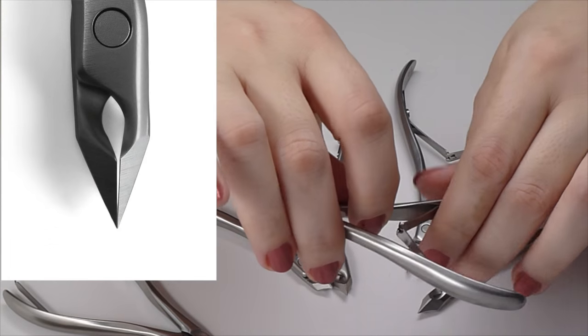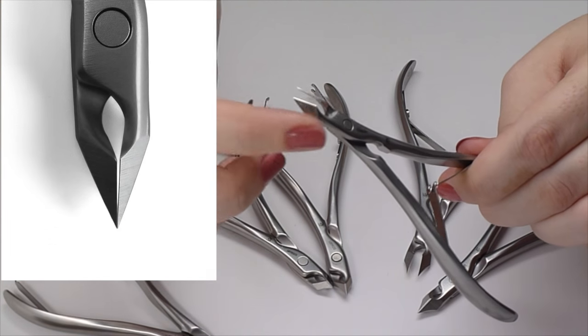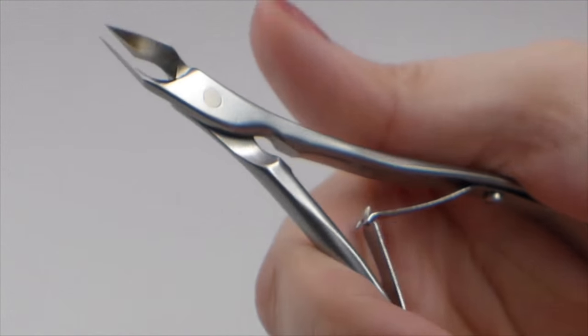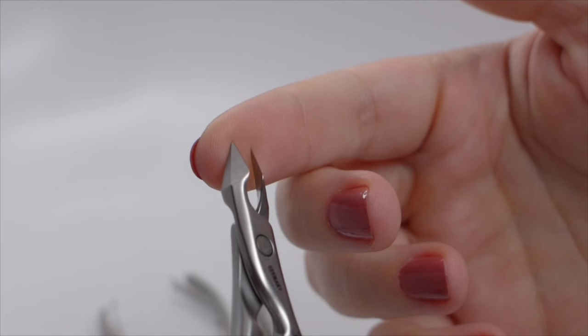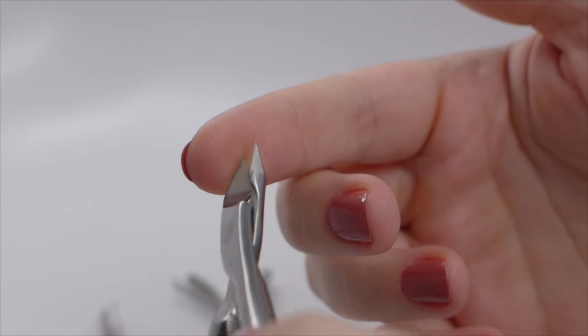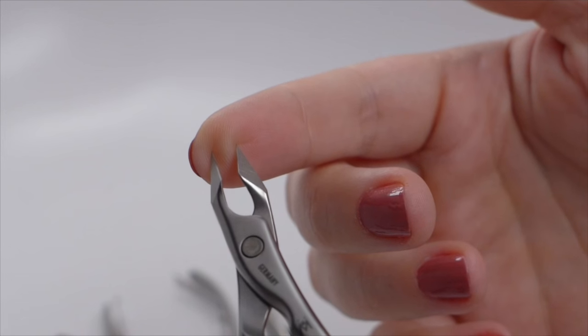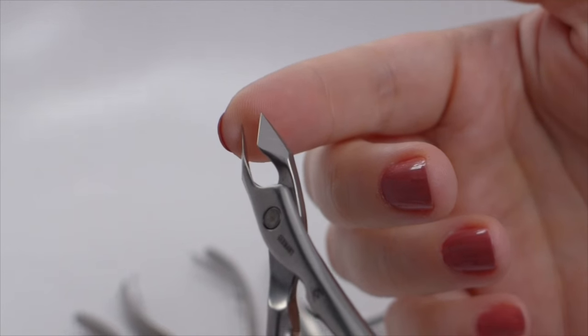The tapered jaw presents the blades at a slightly steeper angle for a more aggressive cut. It produces a very straight line and fits into smaller, narrower, hard-to-reach areas. This jaw shape allows for more precision but it can be harder for a non-professional or student to use.